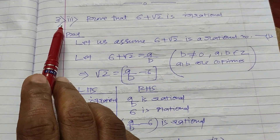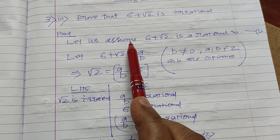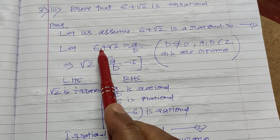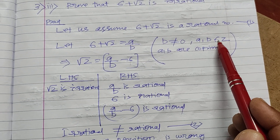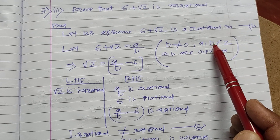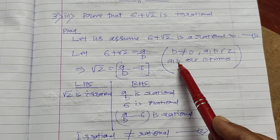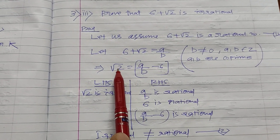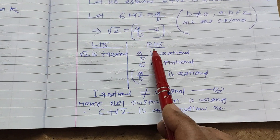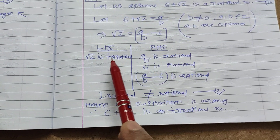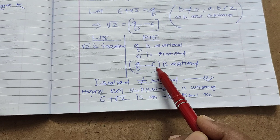Now let us move to question number 3: prove that 6 plus root 2 is irrational. Same way, we will prove by contradiction. Let us assume, if possible, 6 plus root 2 is a rational number. Let 6 plus root 2 equal a by b, where a and b are both integers, b is not equal to 0, a and b belong to the integers, and a and b both are co-primes — meaning they do not have any factor in common other than 1. Rearranging, root 2 is equal to a divided by b minus 6.